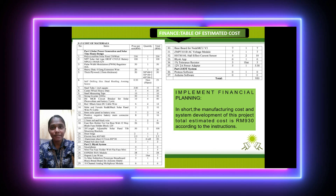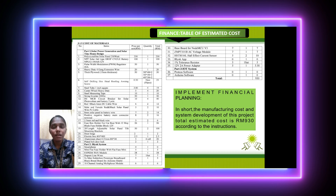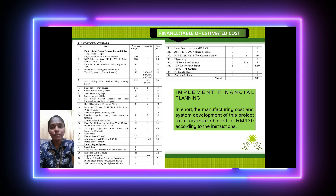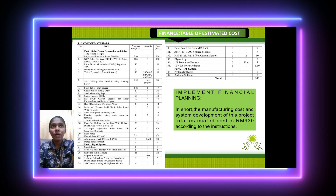Regarding finance, this is the table of estimated cost. Part one — solar power generation and solar tiny house — has an estimated cost of RM844.50. Part two — blink system — is estimated at RM85.50. Part three — IoT — has no cost since we use free software. The total estimated manufacturing cost for this project is RM930.